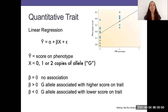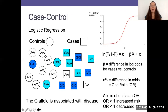If the beta is essentially 0, there's no evidence of association. If the beta is greater than 0, then the G allele is associated with a higher score on that trait. If the beta is less than 0, then the G allele is associated with a lower score on that trait.